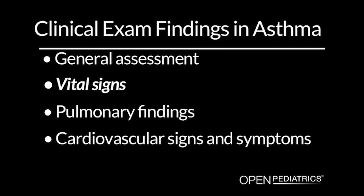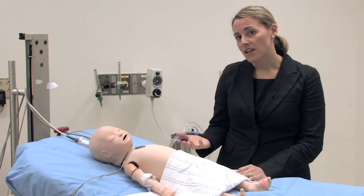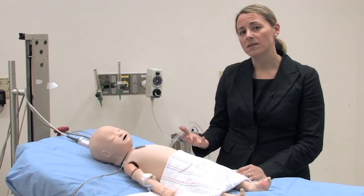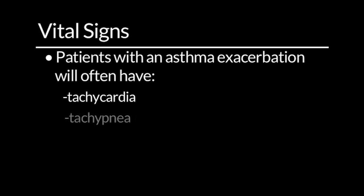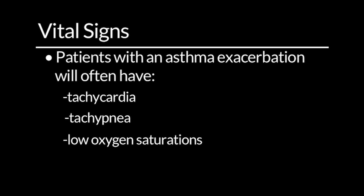Vital signs. The next thing I will look at is the patient's vital signs. Typically, a patient with asthma exacerbation or status asthmaticus will be tachycardic, often quite tachypneic, and may or may not have low oxygen saturations. They often are hypertensive. You want to take a look at all of these vital signs to help direct your therapy.